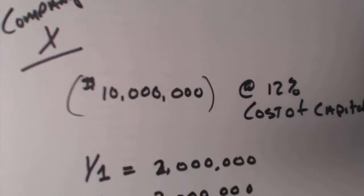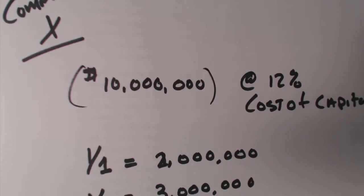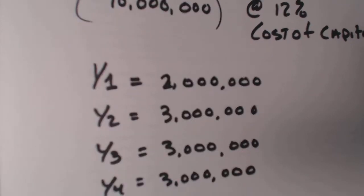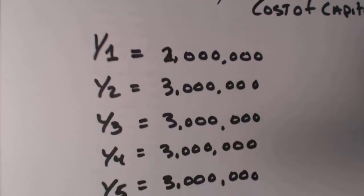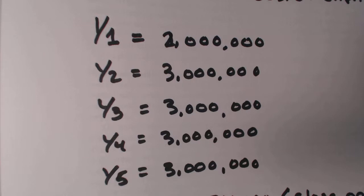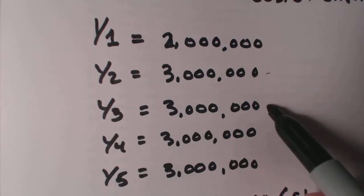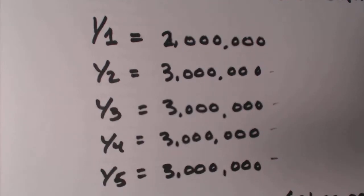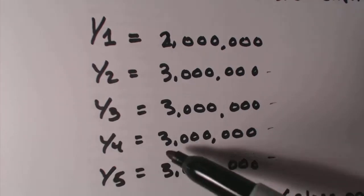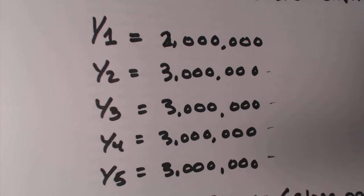In year one they are going to make two million dollars. In years two, three, four, and five they are going to make three million dollars each year, as you can see here. So in total, cash coming into the business is fourteen million dollars and our outlay is ten. We have to look at the time value of money in regards to inflation, interest rates, and cost of capital.